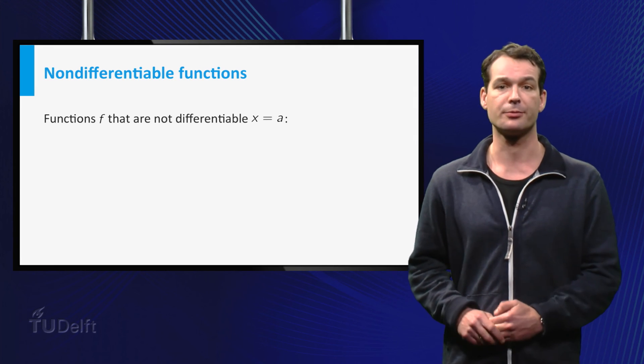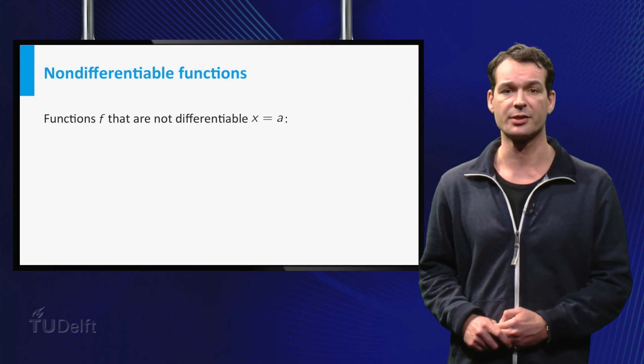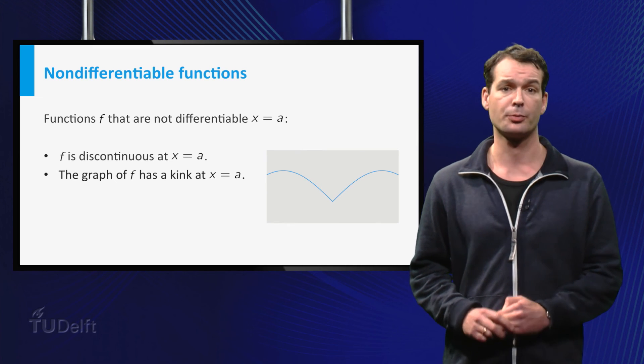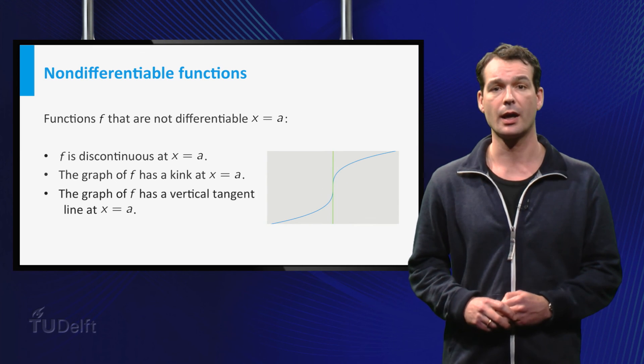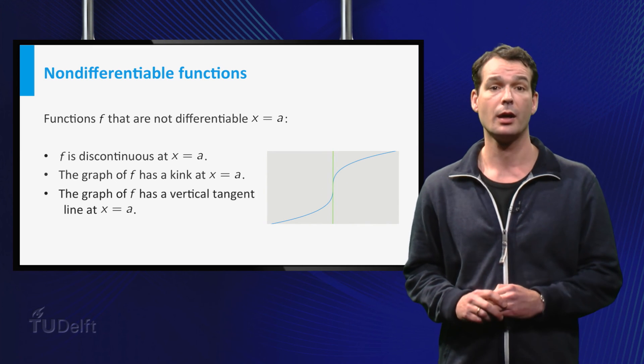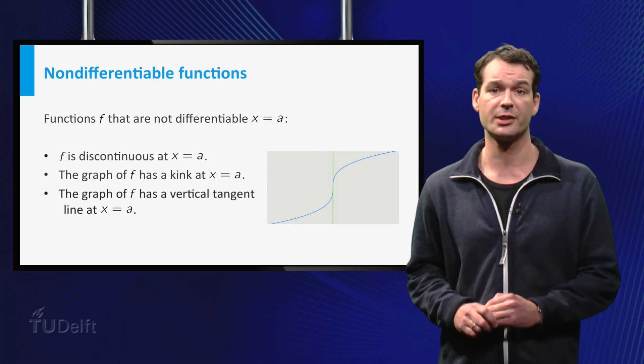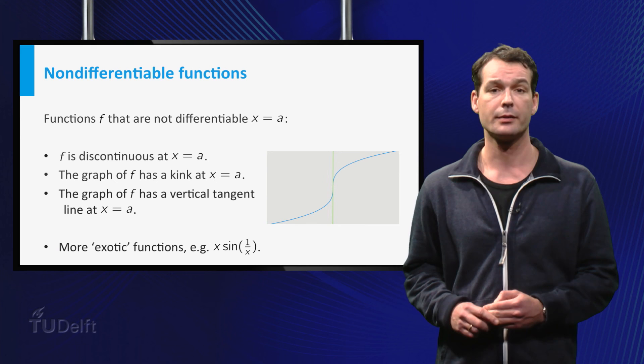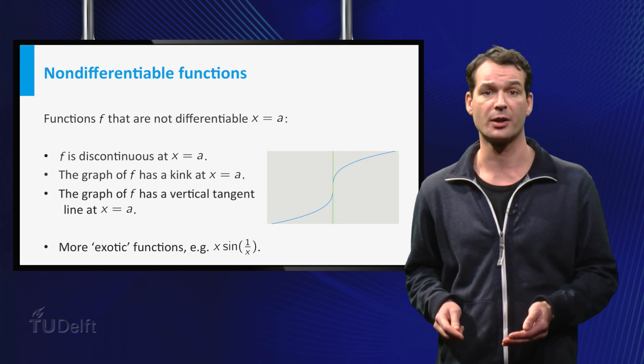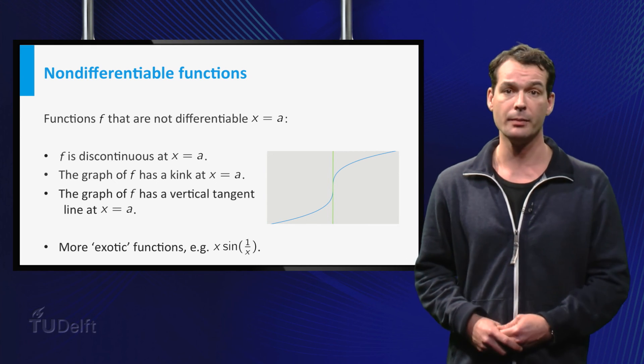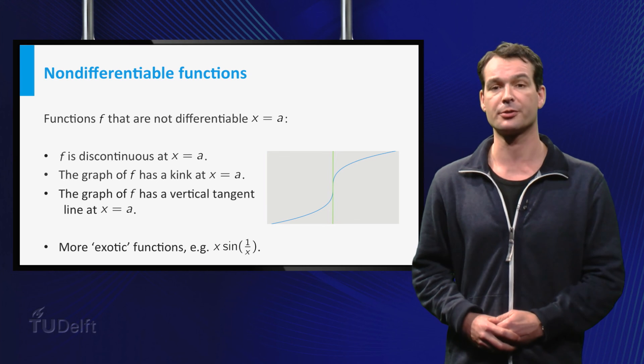So far we have seen the following types of non-differentiable functions: non-continuous functions, functions with a kink in the graph, and functions whose graph has a vertical tangent line. These are the types of non-differentiable functions that you will encounter the most. There are more types of non-differentiable functions, however, you will not encounter them very often. So remember, not all functions are differentiable.